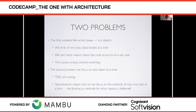The two problems to summarize: first, we don't write objects — we write classes. There are very few people who do true object-oriented programming. How many of you are JavaScript programmers? JavaScript is an object-oriented programming language, or at least it was until they introduced classes. But most of us think of one class at a time and can't reason about the code structure of a use case.